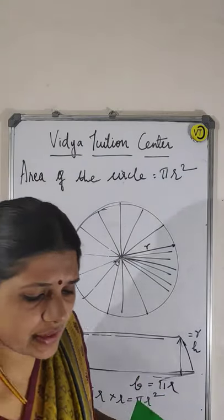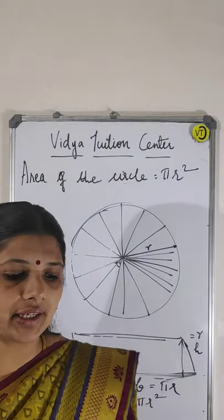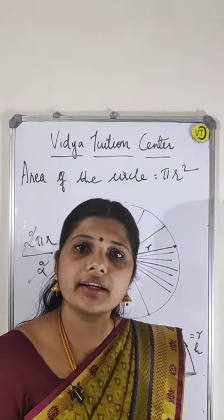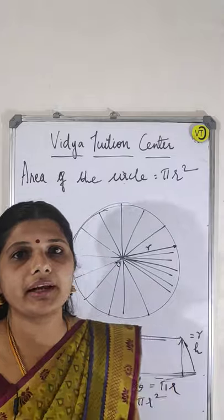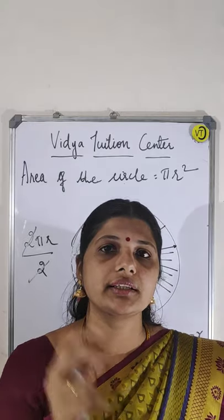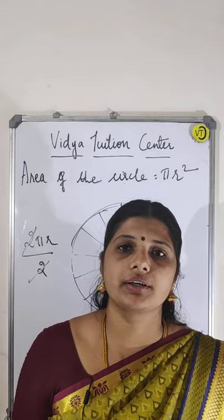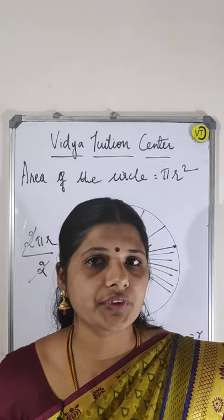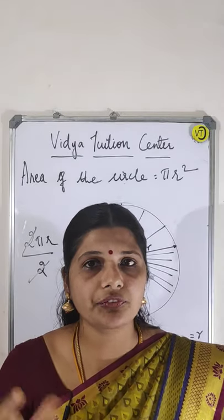Even if you cut this circle into very big pieces, you will be getting an arc-like structure. So to get rid of this, you have to cut it into small small sectors. If you cut small small pieces, you will be getting an exact parallelogram. So do be careful when you are cutting the sectors. This way we know how we got the area of the circle. In the next video I will explain circumference of circle and volume of a sphere through activity, and show you how the formula arrives.